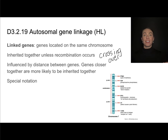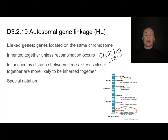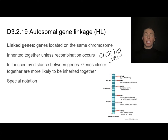Whether or not crossing over takes place is highly influenced by the distance between those genes. Genes that are very close together are likely to be inherited together because there's very little room for crossing over to occur. Genes that are located far apart are less likely to be inherited together because there are many opportunities for crossing over to occur.